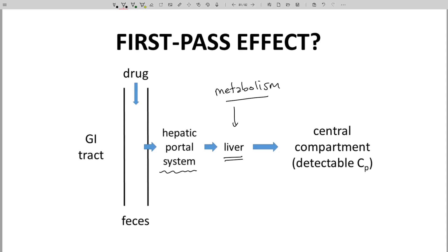What fraction will make it? That would be defined by the extraction ratio of the liver. For our example, at the start of this video, bioavailability was 0.76. We can explain that value if the extraction ratio for the liver is 0.24.